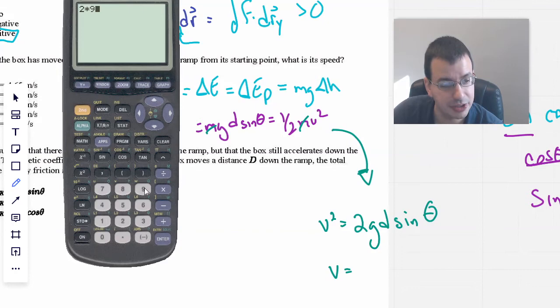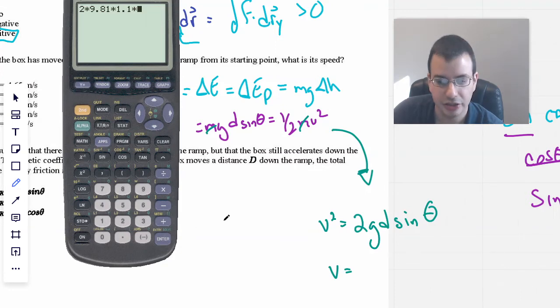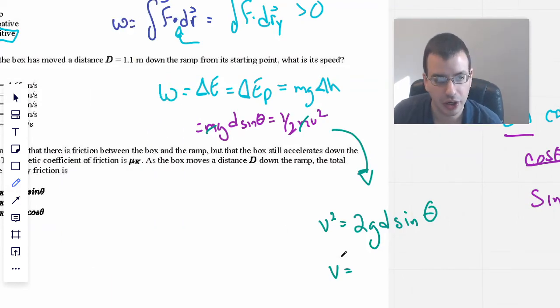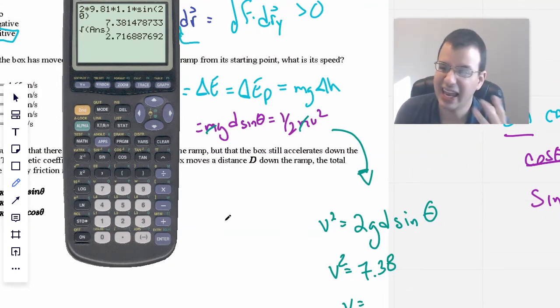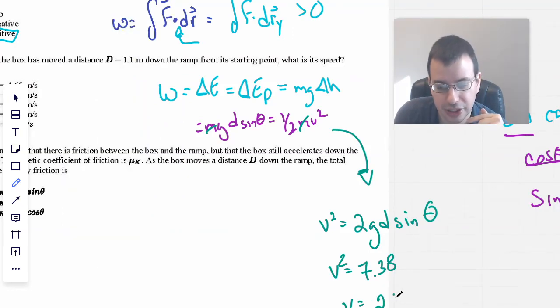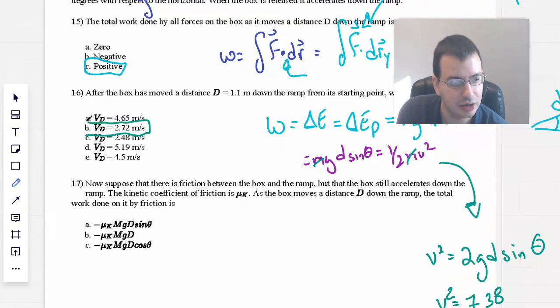2 times 9.81 times 1.1 meters, which is the distance, times sine of 20 degrees. So v squared equals 7.38. 2.717 meters per second. Let's see what we got here. 2.717, that'll be this answer right here, b.